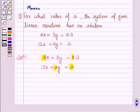Now for no solution, A1 upon A2 is equal to B1 upon B2 but it is not equal to C1 upon C2.